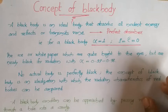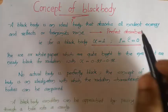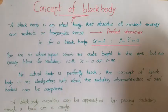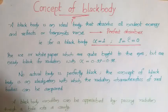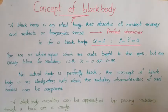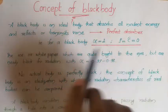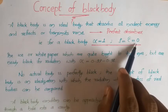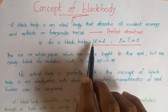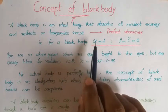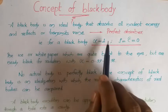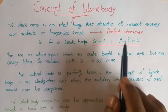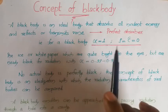In this video we will be seeing more details on black body. A black body is a body which absorbs all incident energy and reflects or transmits none. That means a black body is a perfect absorber for which absorptivity alpha is 1 and reflectivity as well as transmissivity is 0. Usually black bodies are visually black in color, but all visually black bodies need not be black bodies for radiation purposes.